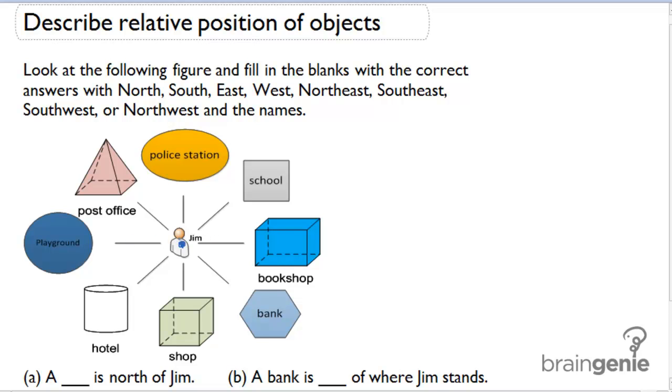And let's label the directions we know. We know this is north of Jim and this is south of Jim. We also know that this is west of Jim and this is east of Jim.